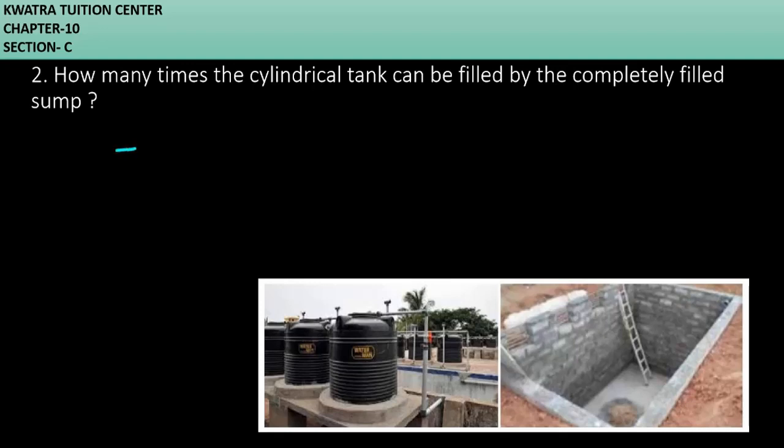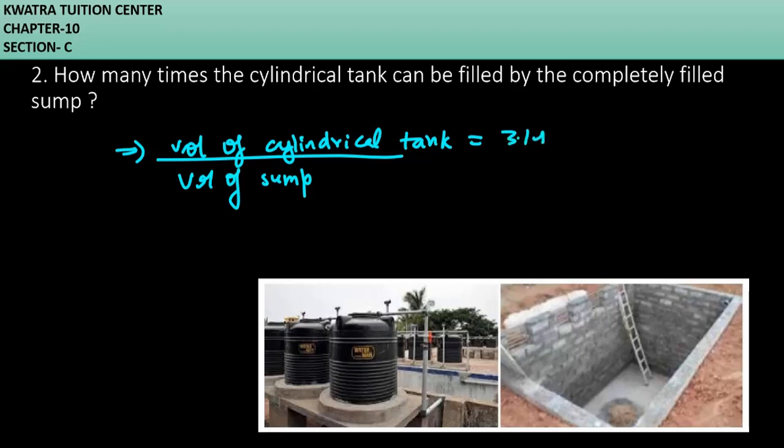So what you will do is you will take volume of cylindrical tank divided by volume of sump. This will give you the ratio between these two and the number of times you can fill the cylindrical tank. So volume of cylindrical tank here: 3.14, r square which is 0.6, into h which is 0.95, divided by volume of sump, 1.57 into 1.44 into 0.95.